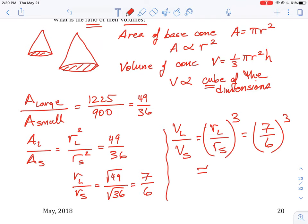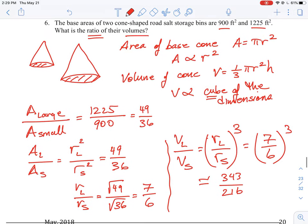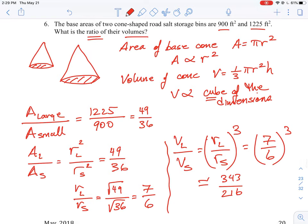We do know what those linear dimensions are—we don't know h, but we do know that the ratio of the radius is the large radius over the small radius.